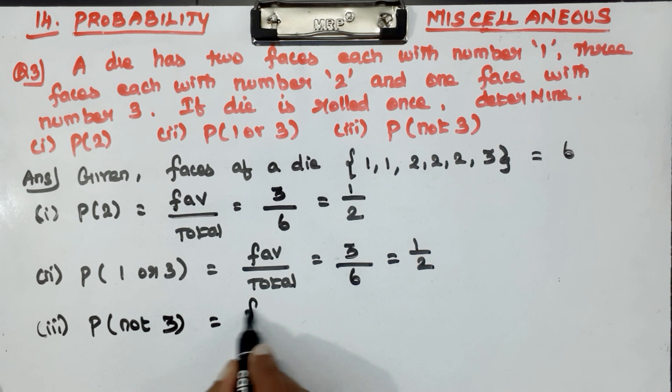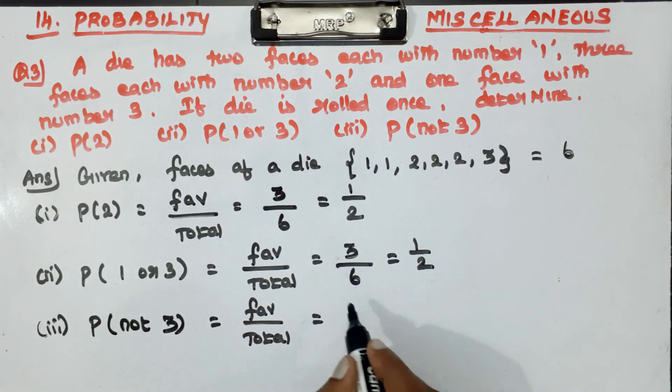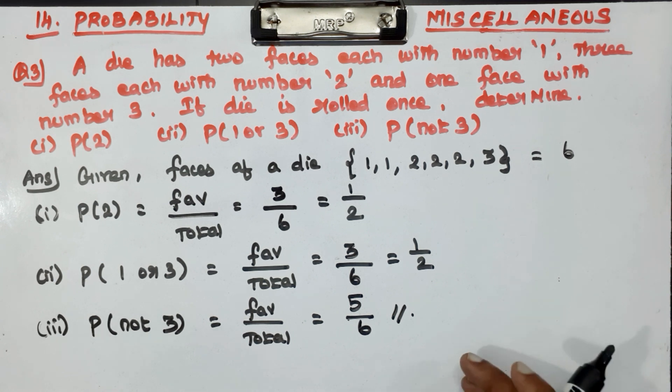Probability of not 3. What is the answer? All outcomes except 3, which is 1, 1, 2, 2, 2. That's 5 favorable outcomes. So the answer is 5 by 6.